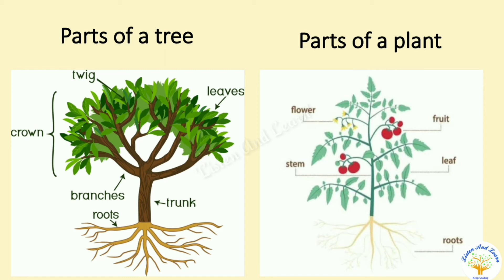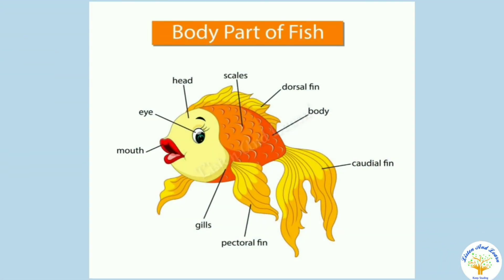Go on reading and labeling the diagrams. Next diagram: body parts of a fish. All the body parts of a fish are labeled here. Read them, pronounce them properly, and draw the diagram in your notebooks. Label it.